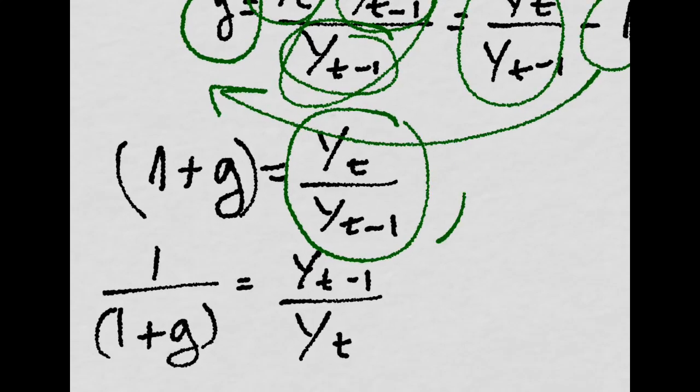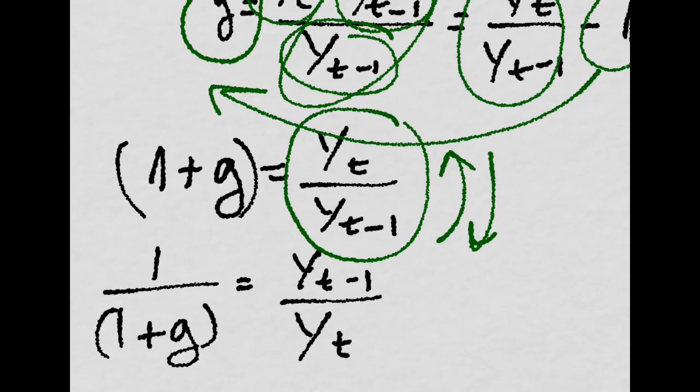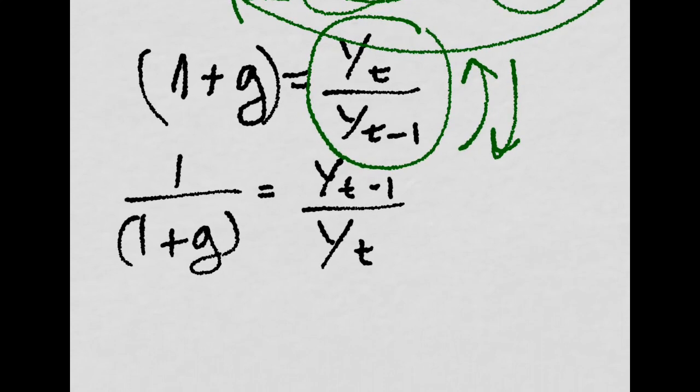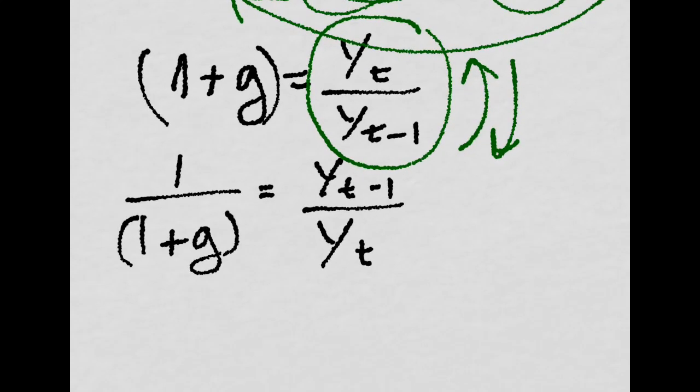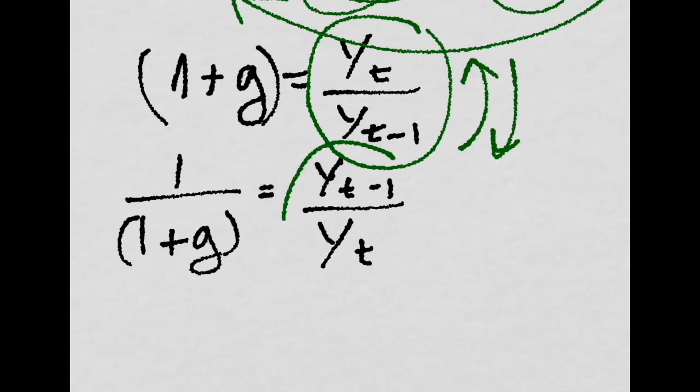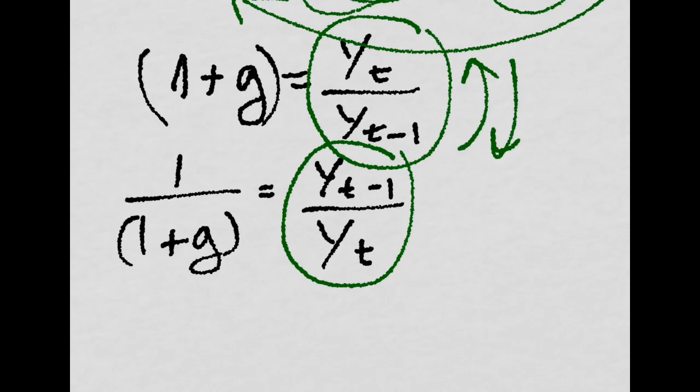But we want it the other way around, right? So we just shift it, and we get 1 over 1 plus G is equal to YT minus 1 over YT.